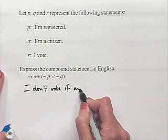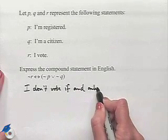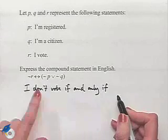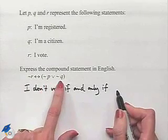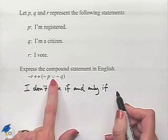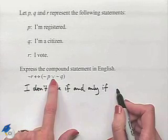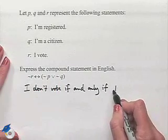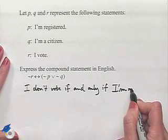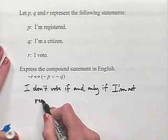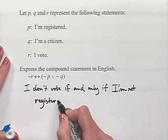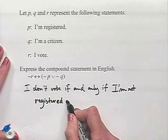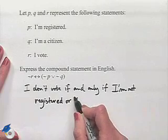And now we need to negate P and we need to negate Q and connect them with this word 'or'. So it would read: I don't vote if and only if I'm not registered or I'm not a citizen.